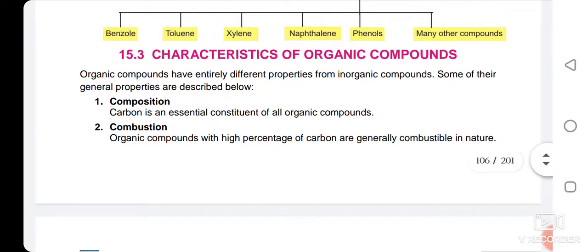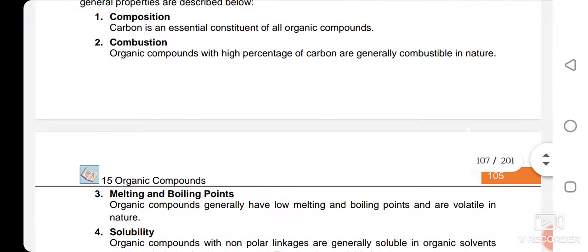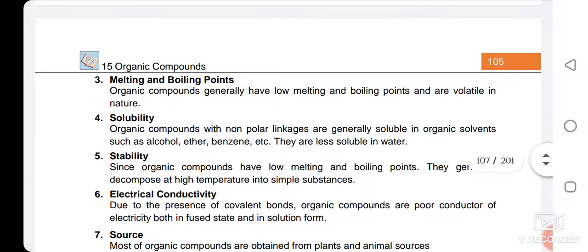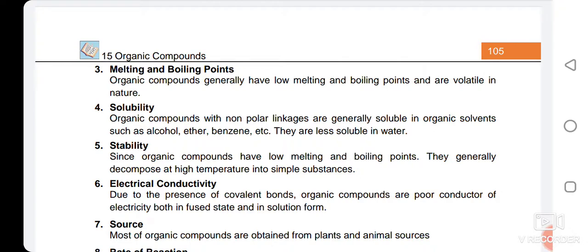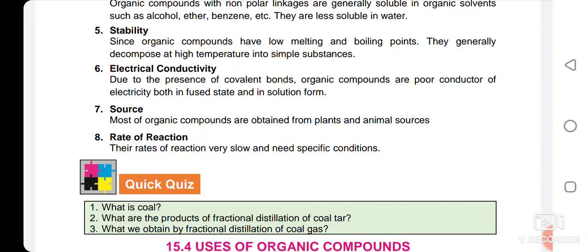Organic compounds have some general properties. Regarding composition, carbon is an essential element in organic compounds. Due to a high percentage of carbon, they are combustible in nature — they catch fire. They usually have low melting points and low boiling points, making them volatile in nature. Regarding solubility, organic compounds are non-polar and are soluble in non-polar solvents like alcohol, ether, and benzene, and are very less soluble — sometimes insoluble — in water.